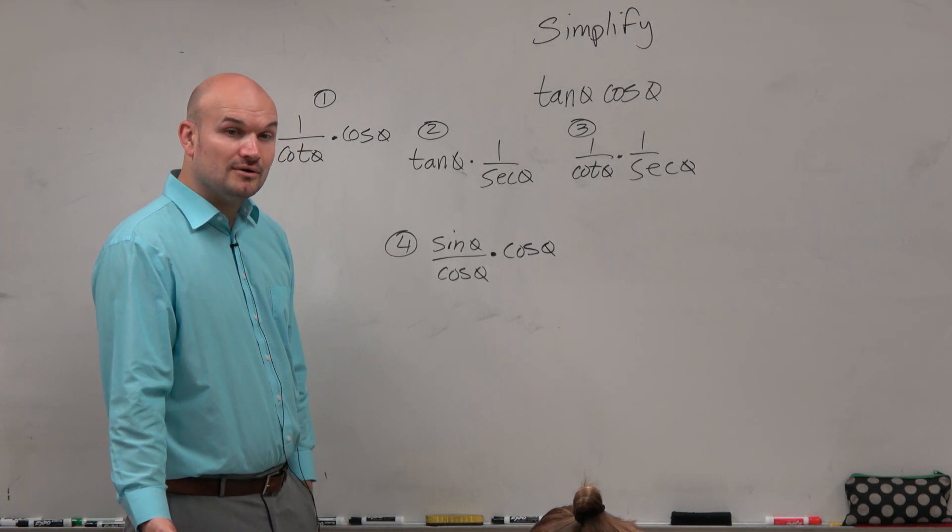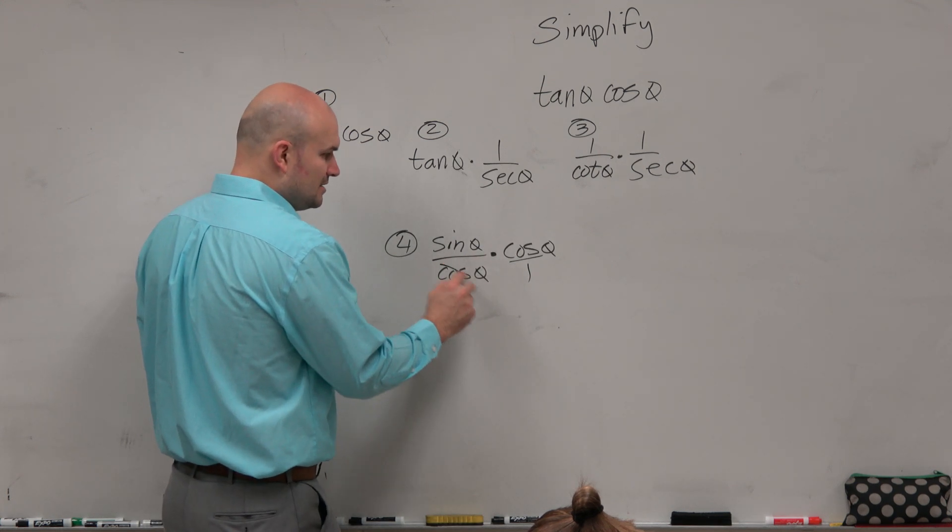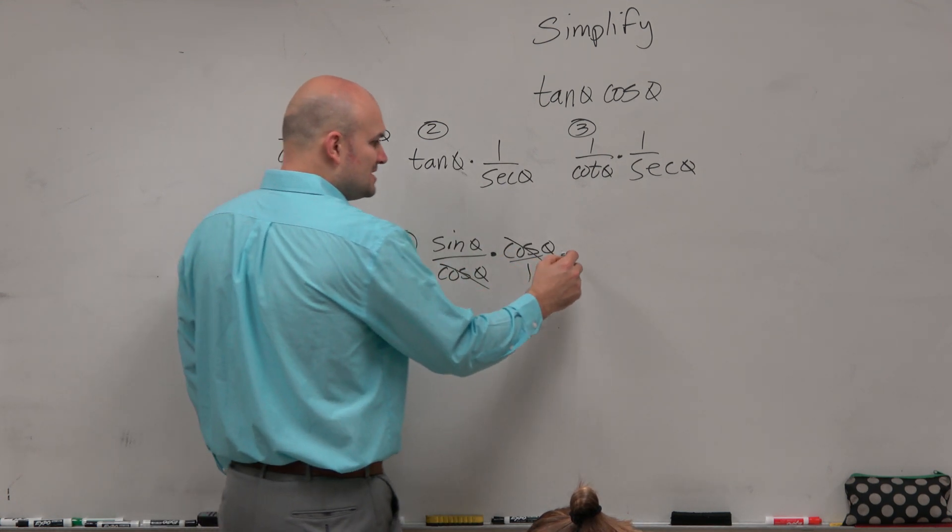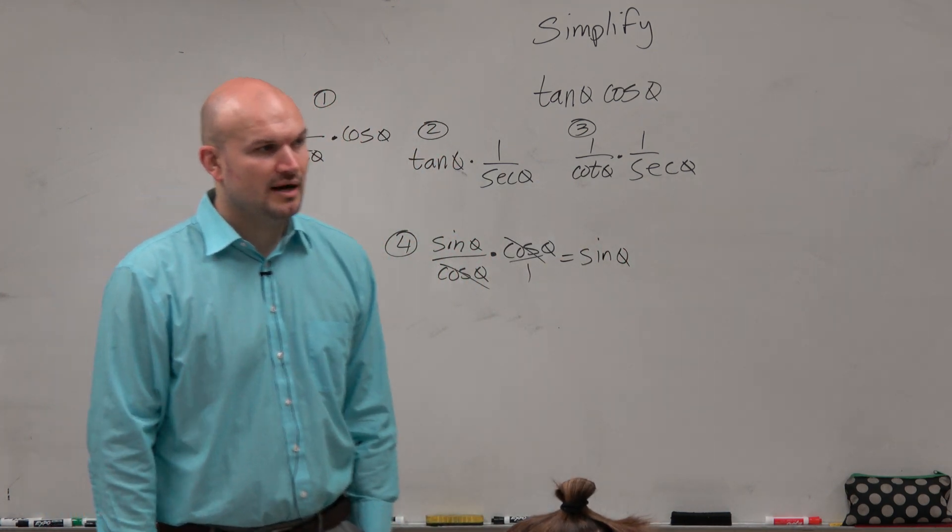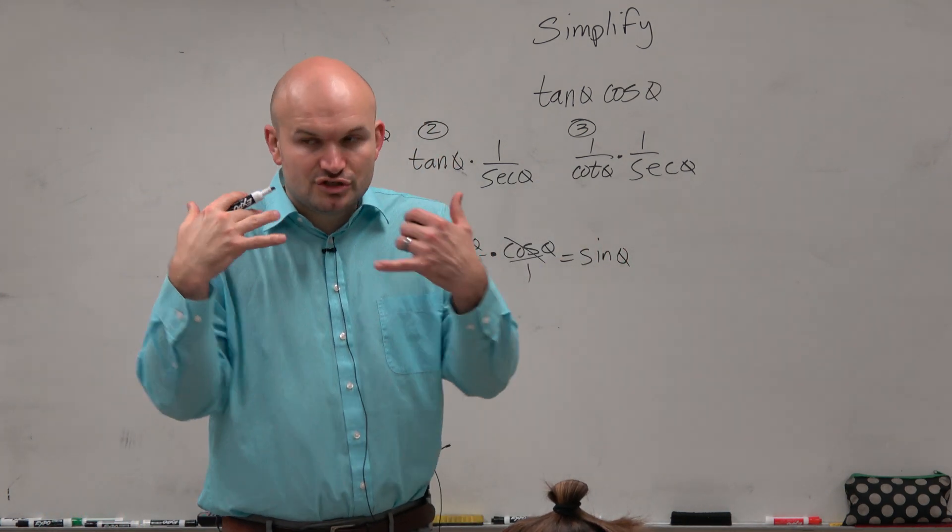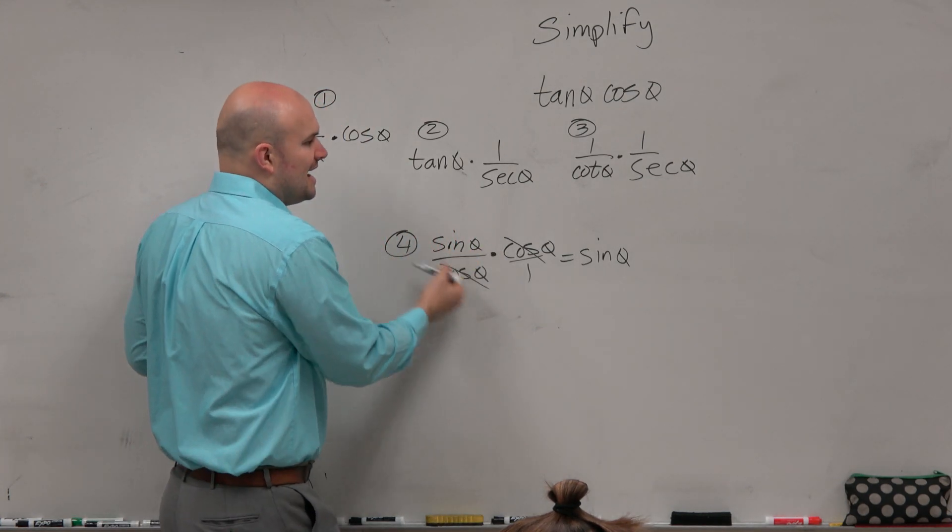And oh, now you guys can see that I have a cosine in the denominator, cosine in the numerator. That represents simplified. That gives me a sine of theta. Right? So by using a specific identity, I can see that I can simplify this.